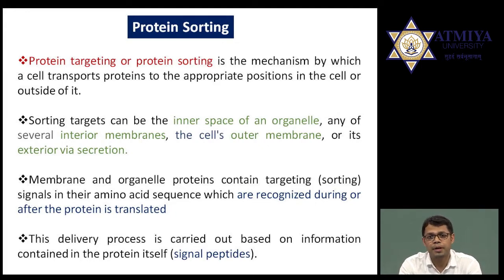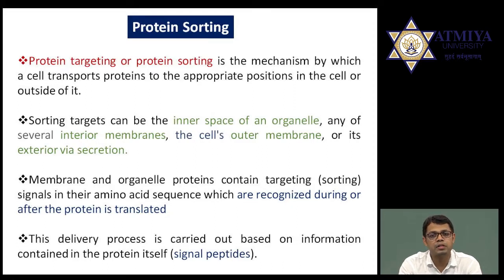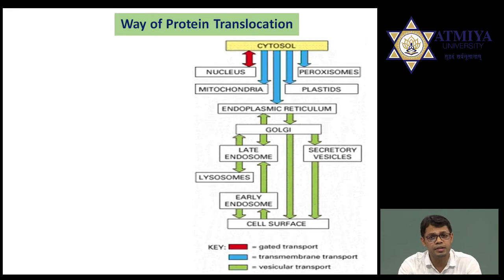There are different types of signal peptides, which we will discuss later. Here we are trying to understand what protein targeting or protein sorting is. Protein targeting or protein sorting is a mechanism by which a cell transports proteins — those produced either by free ribosomes in the cytoplasm or synthesized in the rough endoplasmic reticulum — from the synthesis site to the target site. That process is known as protein targeting or protein sorting.